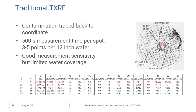the TXRF engineer can report back that the aligner chuck specifically is contaminated with these elements. This was more of a traditional TXRF measurement where we had limited coverage of the wafer — maybe only measuring three to five points on a 12-inch wafer, but we measured for 500 seconds per spot, so we got excellent measurement sensitivity but limited wafer coverage.